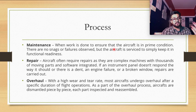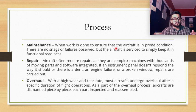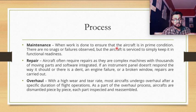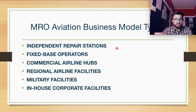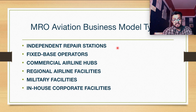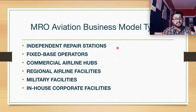For example, the landing gear is a separate part of the airplane used for takeoff and landing, and it is mostly provided by a separate company — such as Safran. Safran's MRO takes care of each and every component during overhaul. In aviation, there are different types of MRO business models: independent repair stations (third-party), fixed-base operators, commercial airline sub-facilities, regional airline and airport facilities, military facilities for military aircraft, and in-house MRO — for example, Boeing performing MRO on its own aircraft.